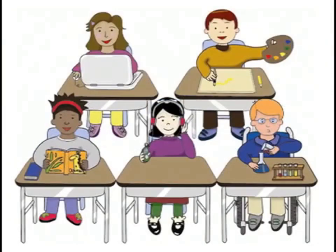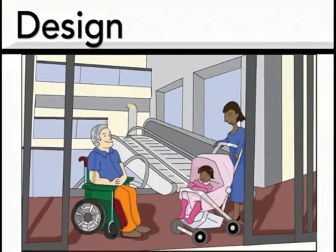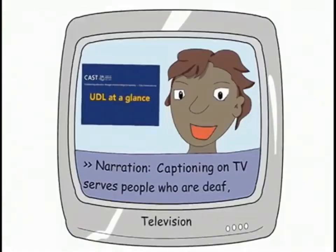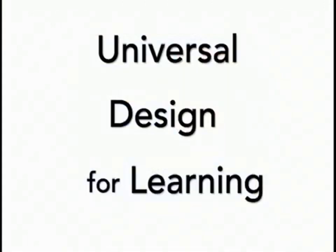Every learner is unique, and one size does not fit all. A universally designed building is planned to be flexible and to accommodate all kinds of users, with and without disabilities. If you design for those in the margins, your building works better for everyone. Curb cuts and ramps are used by people in wheelchairs, people with strollers, and people on bikes. Captioning on TV serves people who are deaf, people learning English, and people in gyms.